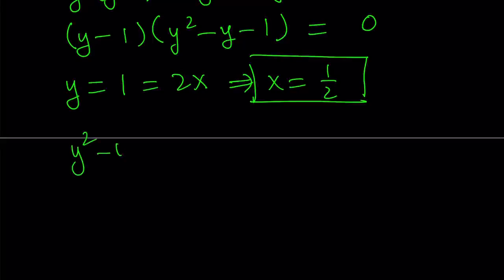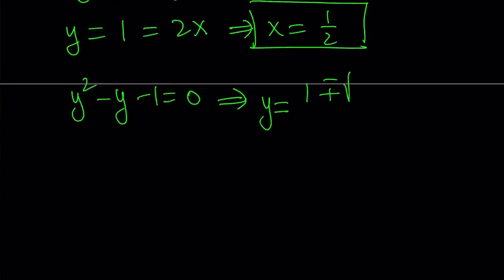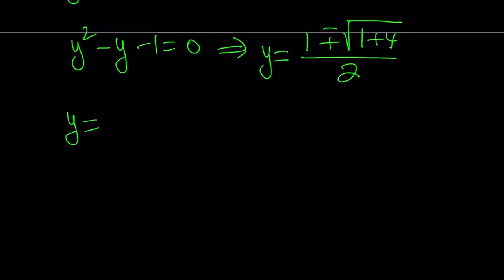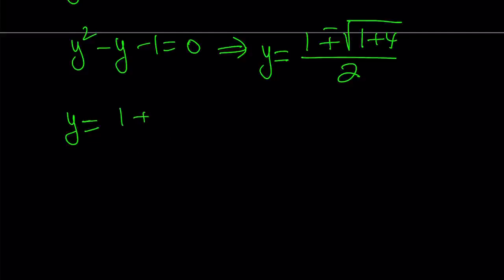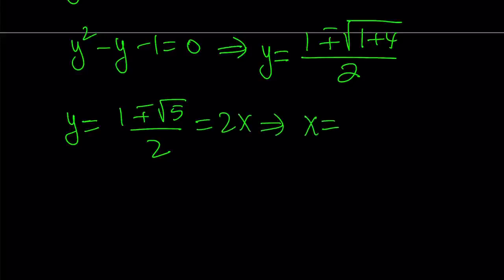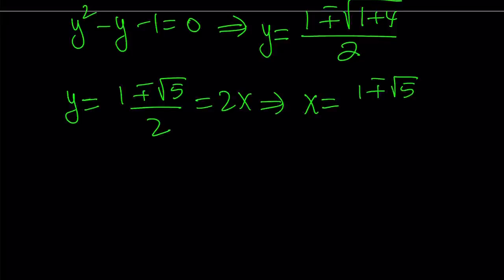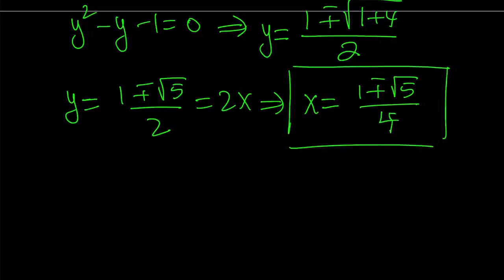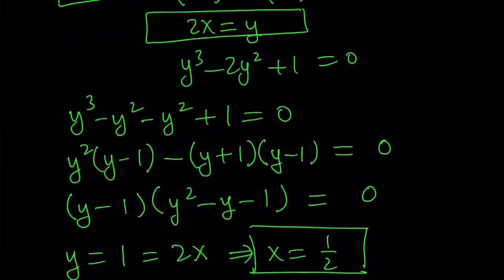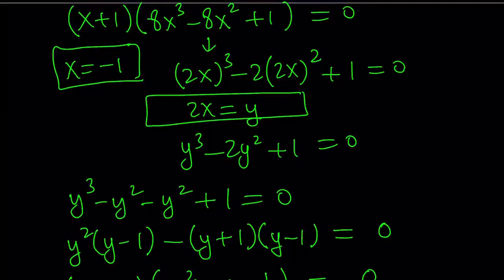Now we deal with the quadratic equation using the quadratic formula. y equals negative b plus or minus the square root of b squared minus 4ac — that's 1 plus 4 — giving us y equals (1 ± √5) / 2. By setting y equal to 2x, we get x equals (1 ± √5) / 4. So we got two solutions from here, another solution x equals 1/2, and the first one x equals negative 1. That gives us four real solutions, which is all of them since this is a quartic.